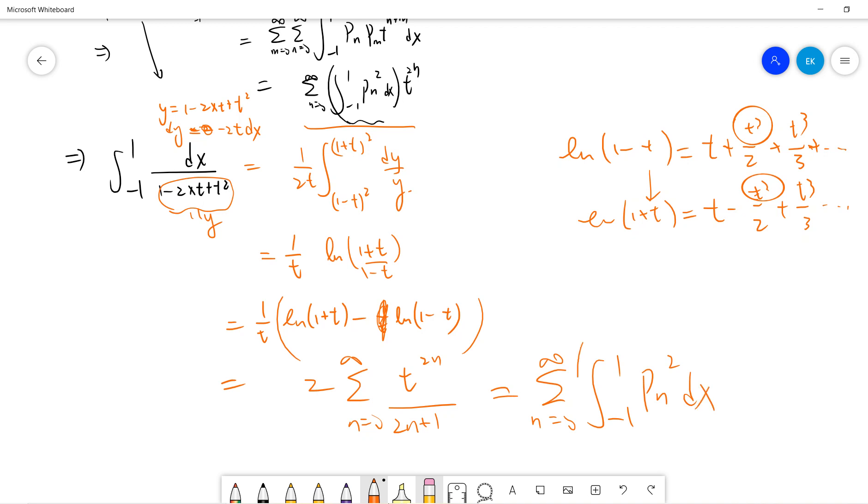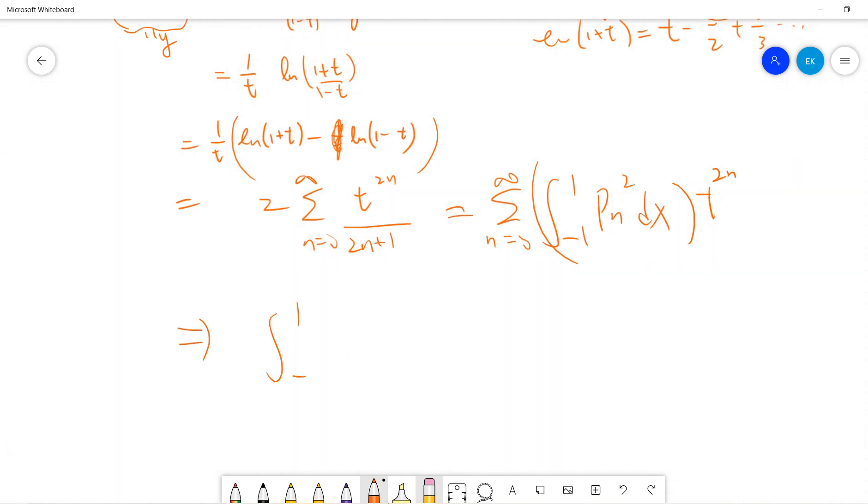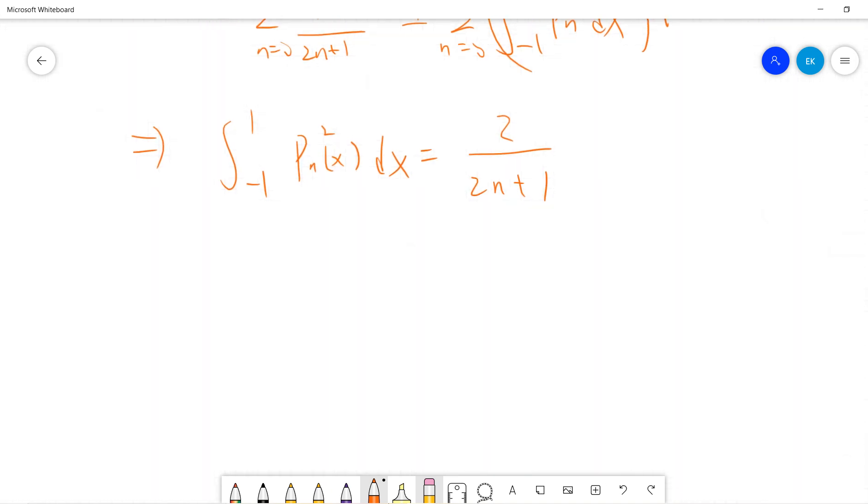So sum from n equal 0 to infinity, integral from minus 1 to 1 of Pn squared dx times t to the 2n. So it's very happy that we solved this stupid normalization constant.